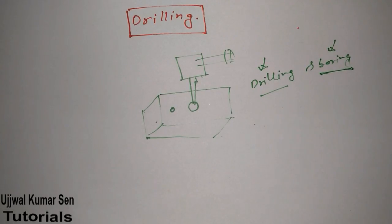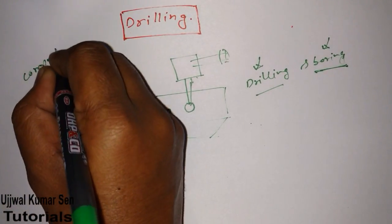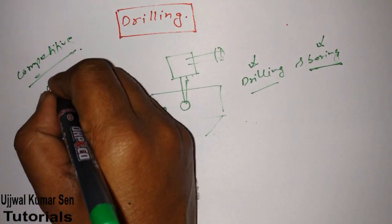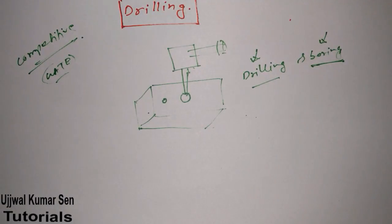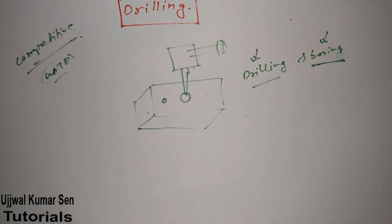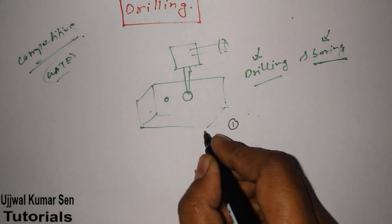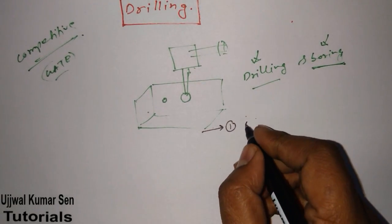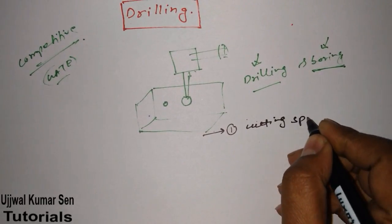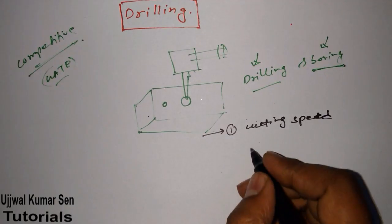This tutorial is dedicated to complete examination preparation. I'm going to share questions that have been asked before, but first let me share the two most important formulas used to solve drilling problems. The first formula is cutting speed: V = π d N / 1000, in meters per minute.